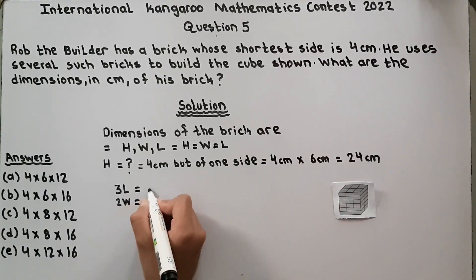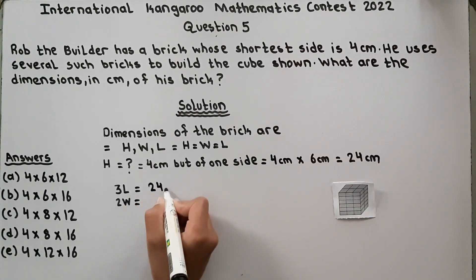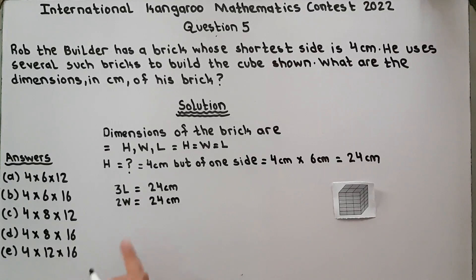3L equals 24 cm and 2W also equals 24 cm. Now we have to find length and width. Here, 3 is multiplying with L and 2 is multiplying with W. So if we take 3 here, it will be dividing. L equals 24 divided by 3.